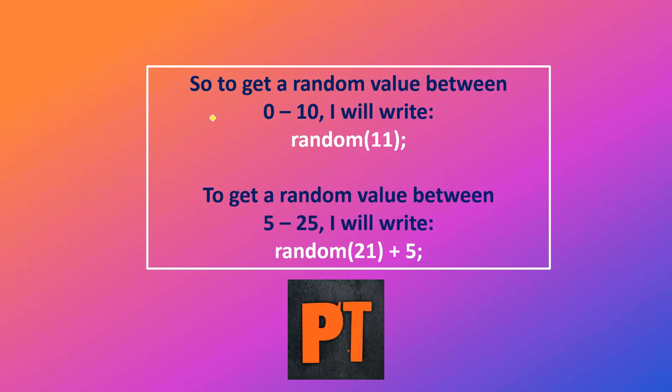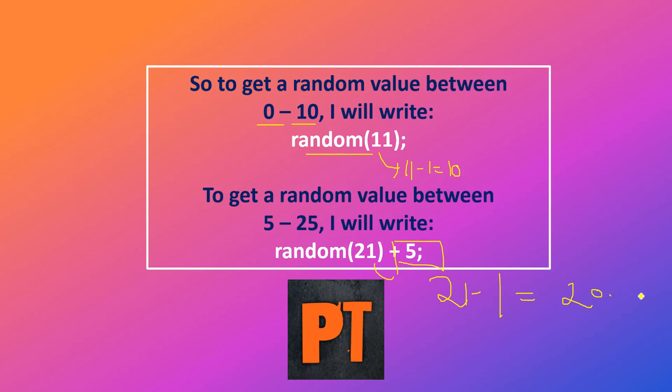So if I want to get a random value between 0 and 10, I will write random(11) — because 11 minus 1 is 10. To get a random value between 5 and 25, I will write random(21) plus 5. First ignore the addition: 21 minus 1 equals 20. Now plus 5 — upper limit becomes 20 plus 5 equals 25, lower limit becomes 0 plus 5 equals 5.